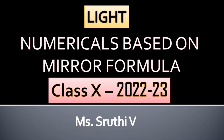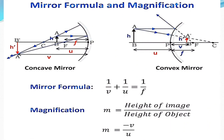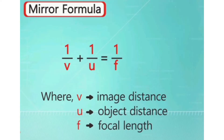Hello students. In this video, let's solve some problems based on mirror formula. This video is based on the chapter light reflection and refraction. Before moving to the questions, let's first recall what is mirror formula. The formula which gives the relationship between image distance, object distance, and focal length of a spherical mirror is known as mirror formula. The mirror formula is written as 1/v + 1/u = 1/f, where v is the distance of the image from the mirror, u is the distance of the object from the mirror, and f is the focal length of the mirror. The mirror formula has three values in it, so if any two values are known, the third value can be calculated.